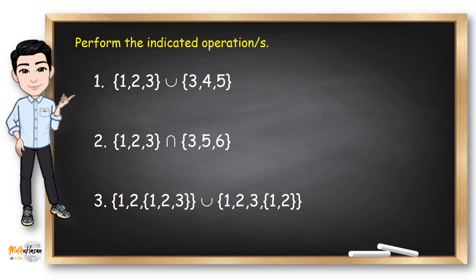How about the second example? We need to get the intersection of two sets. All we need to do is identify the common elements. In this case, the only common element between the two is 3. So the intersection of these two sets is the set containing 3.